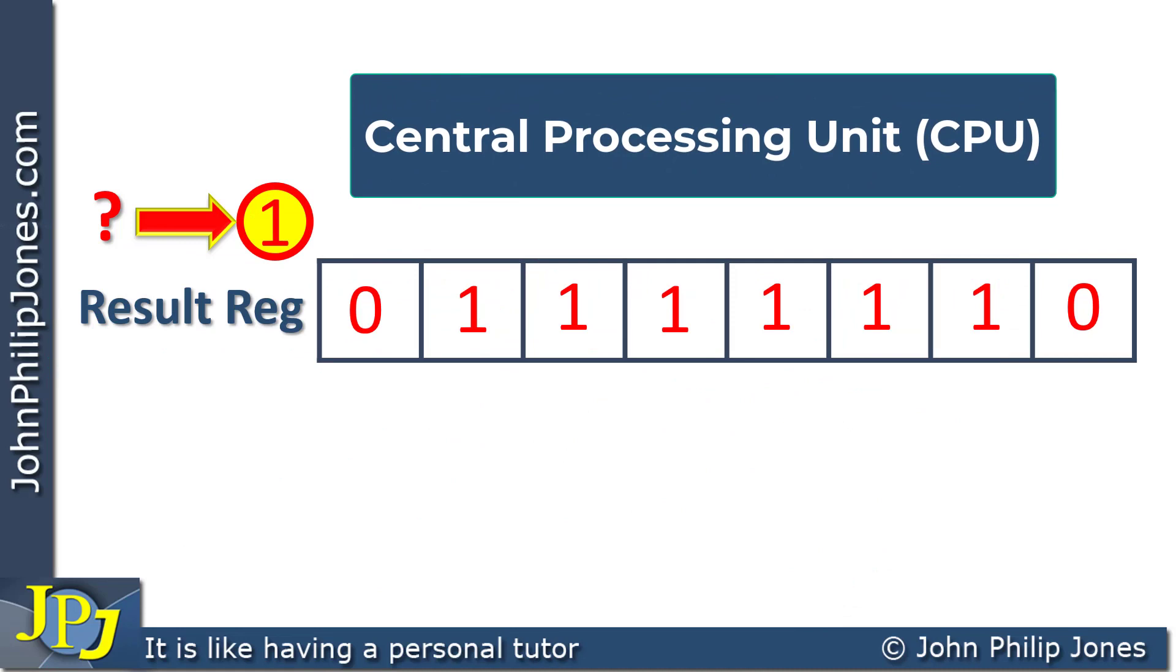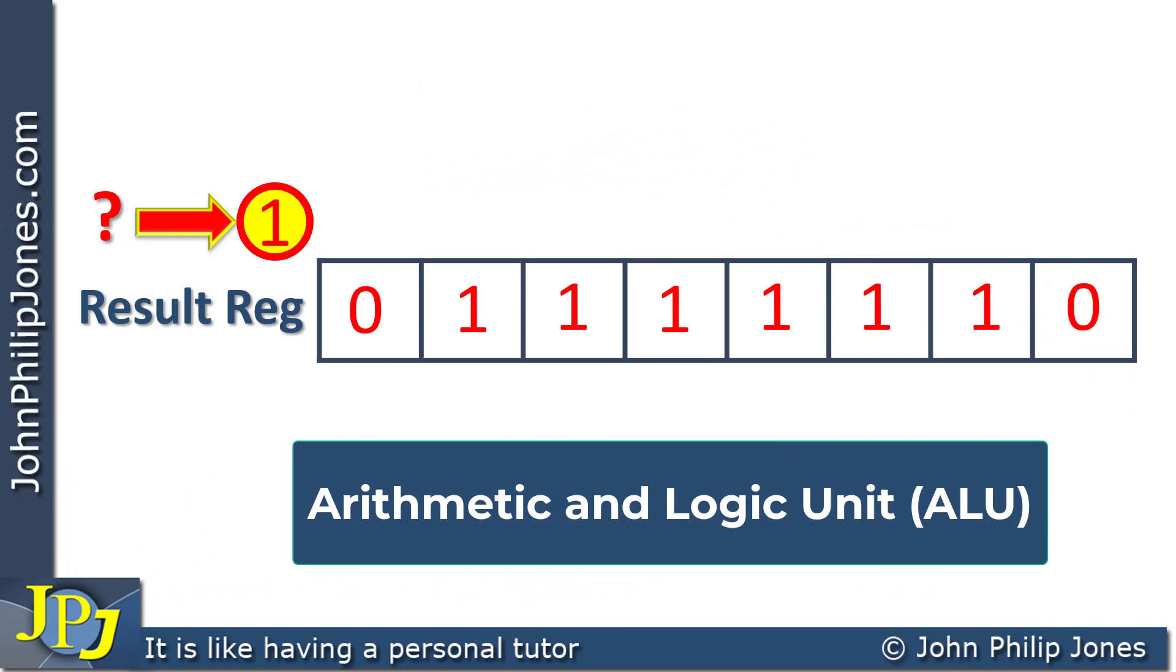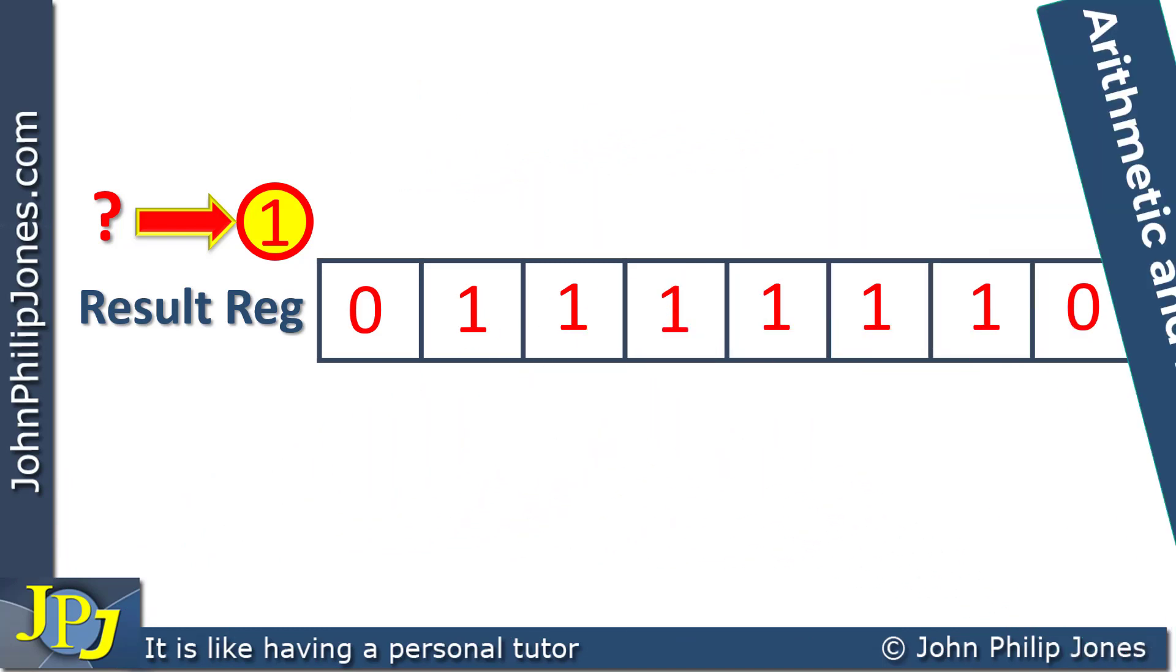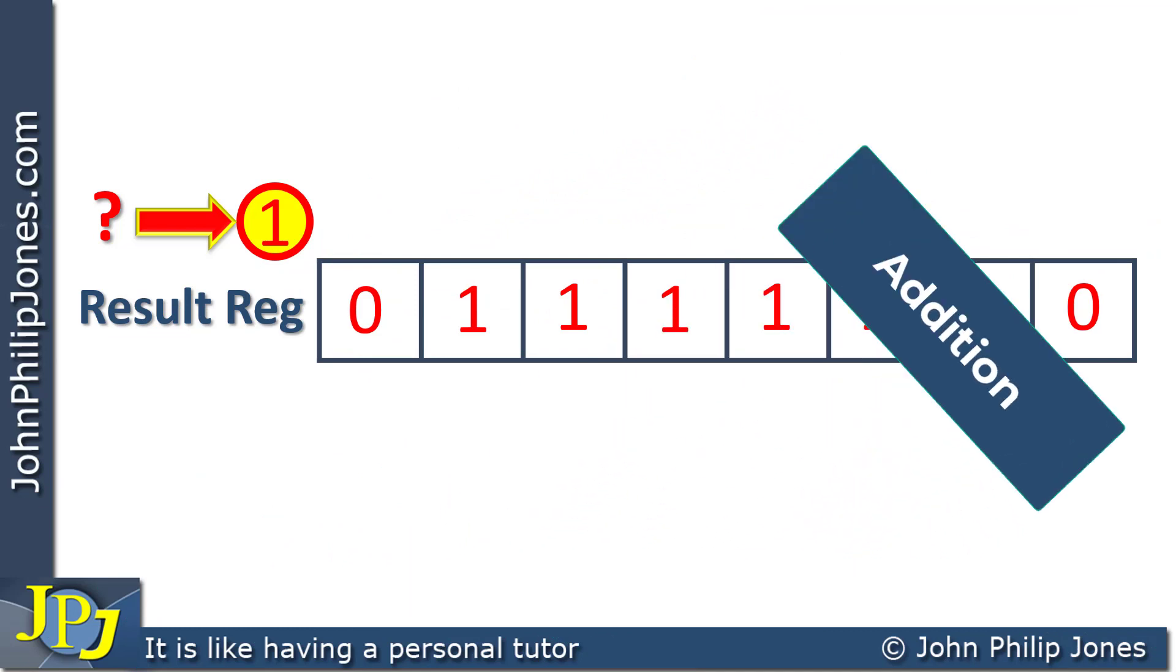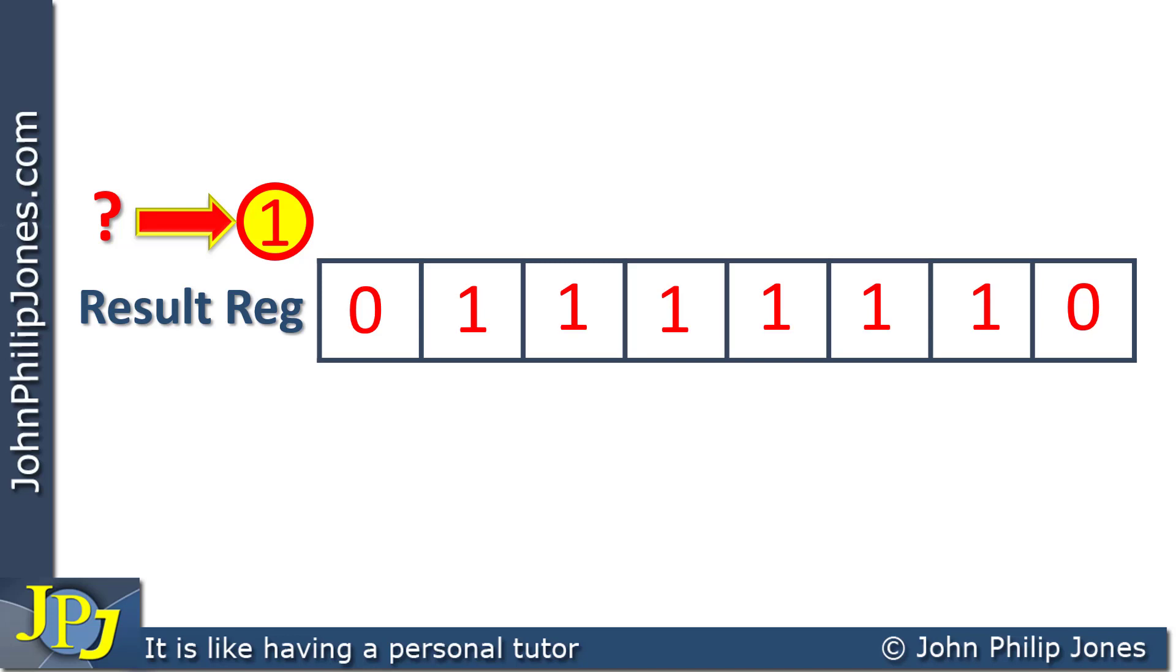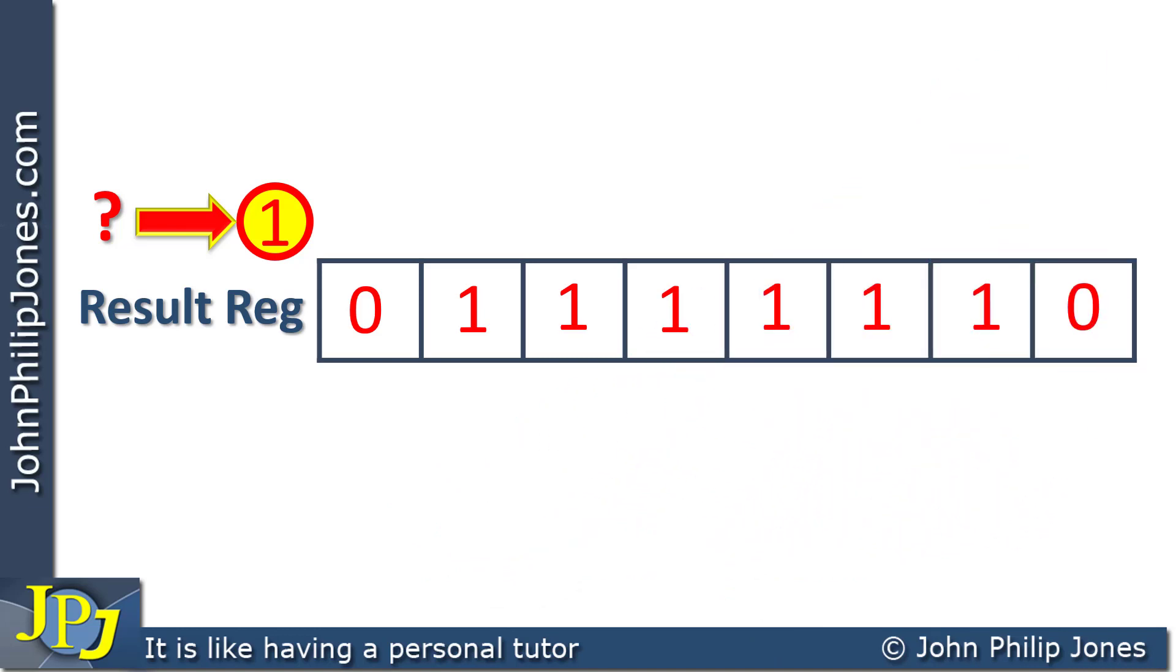Within the central processing unit of a computer, there is an arithmetic and logic unit. Now, this will perform calculations such as addition, and that's been illustrated in this video. The results of the numbers we've been adding up here have given us a 9-bit result, and that's too big to go into an 8-bit register.